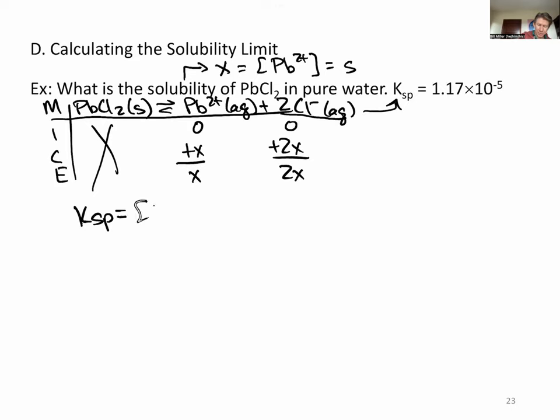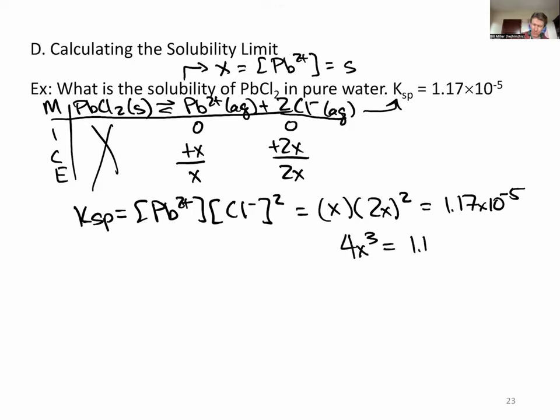And our Ksp expression for this is going to be lead 2 plus concentration times Cl minus concentration squared, which will be X times 2X squared equals 1.17 times 10 to the minus 5th. So this is going to be 4X cubed. And then we can divide by 4. X cubed equals 1.17 times 10 to the minus 5 divided by 4. I get 2.93 times 10 to the minus 6. And then cube root it.